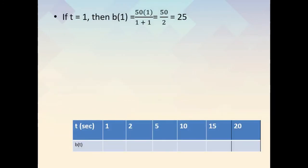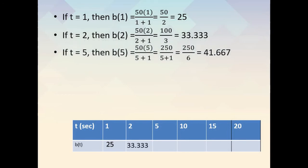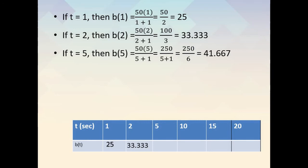If t is equal to 1, then b of 1 is equal to 50 times 1 over 1 plus 1, which is 50 over 2, which is 25. If t is equal to 2, then b of 2 is equal to 50 times 2 over 2 plus 1, which is equal to 100 over 3, which is equal to 33.333. If t is equal to 5, then b of 5 is equal to 50 times 5 over 5 plus 1, which is equal to 250 over 6, which is equal to 41.667.